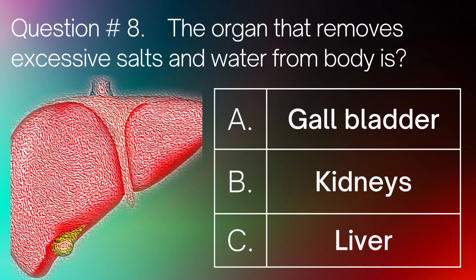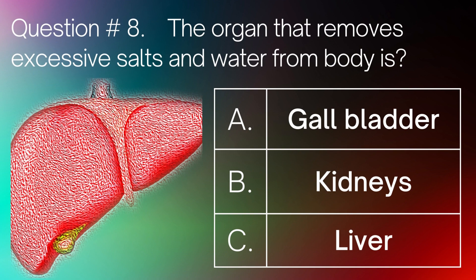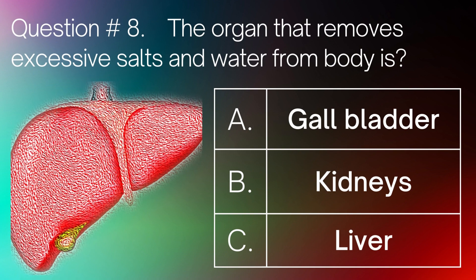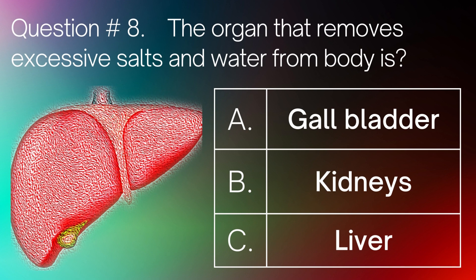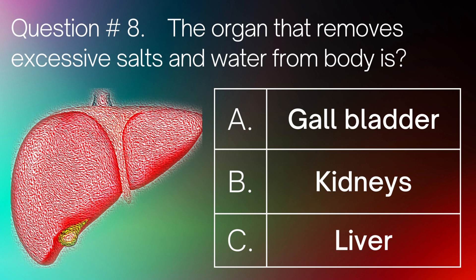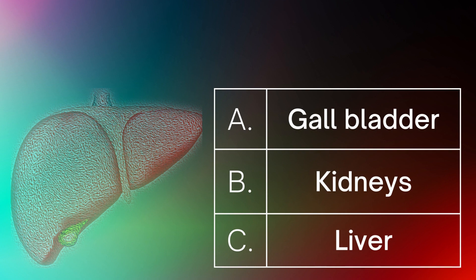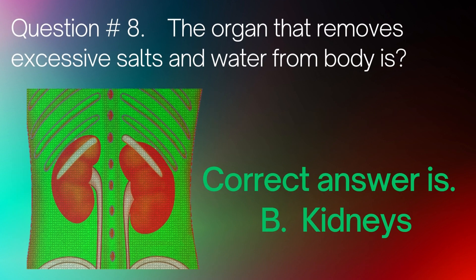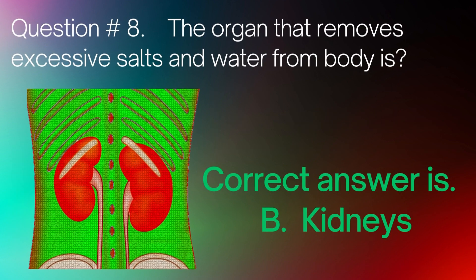Question number 8. The organ that removes excessive salts and water from the body is: A. Gallbladder. B. Kidneys. C. Liver. Correct answer is B. Kidney.